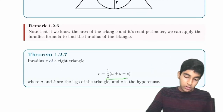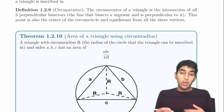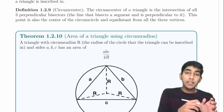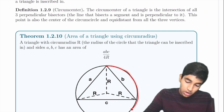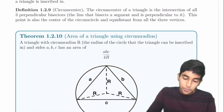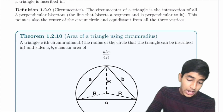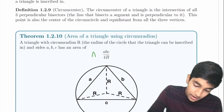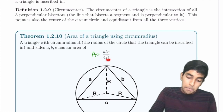The circum-radius is the radius of the circumscribed circle — the circle that passes through all three vertices of the triangle. The circum-center is the center of that circle. A triangle with circum-radius R has area = abc / (4R). You can also use this formula backwards to find the circum-radius based on the area, sometimes using Heron's formula to find the area first.